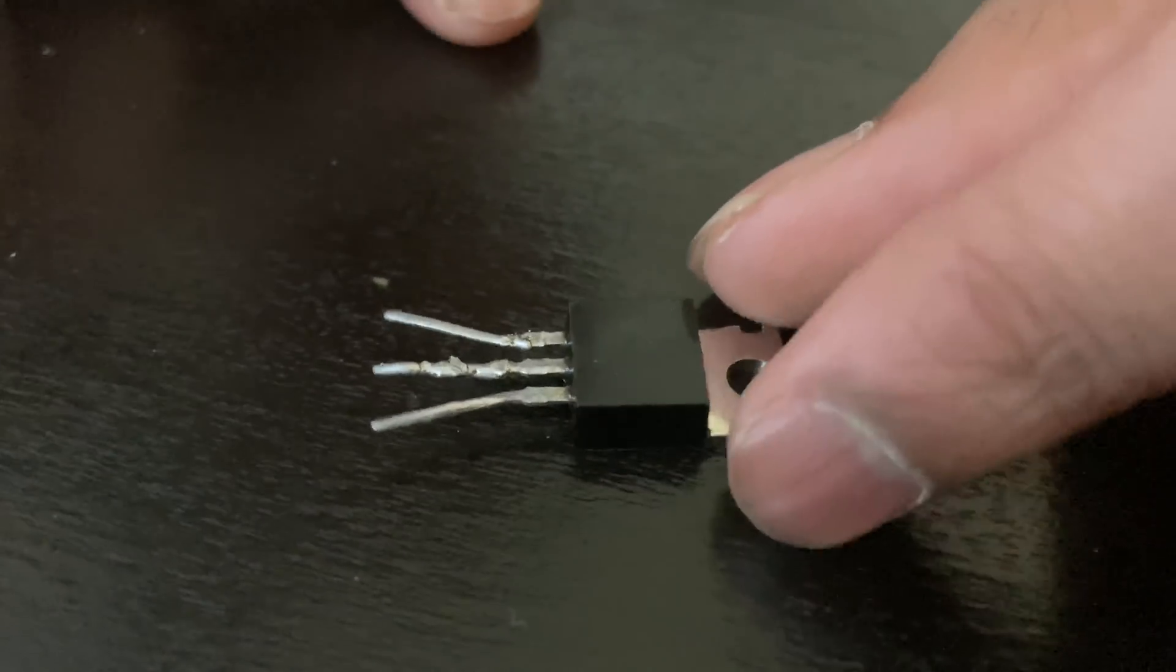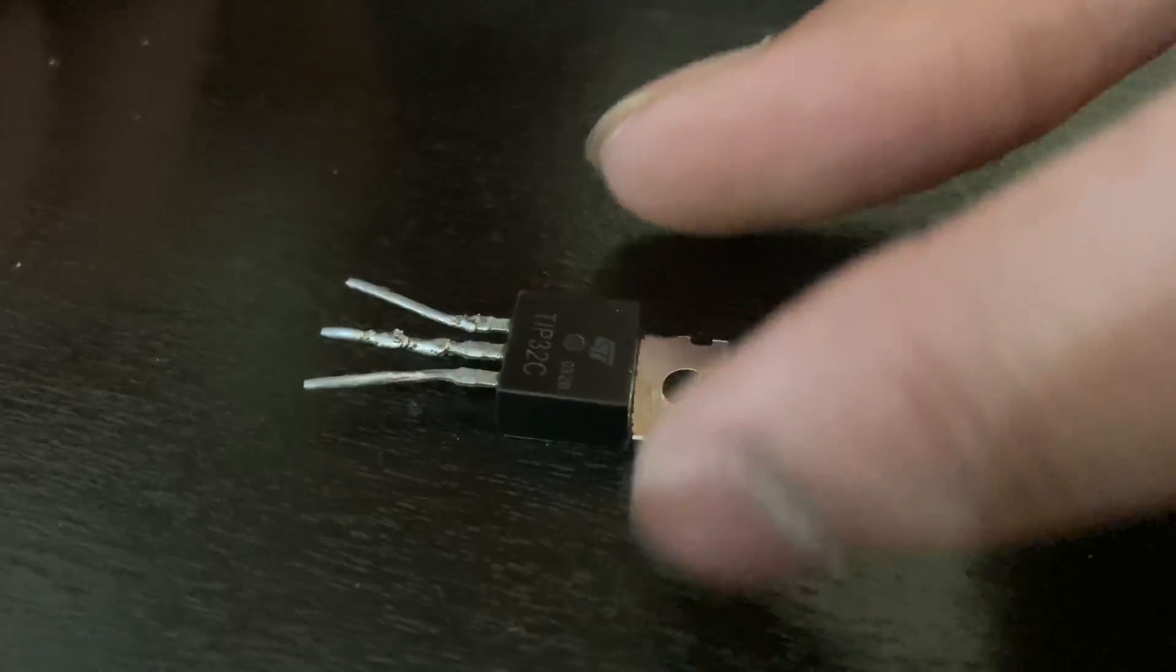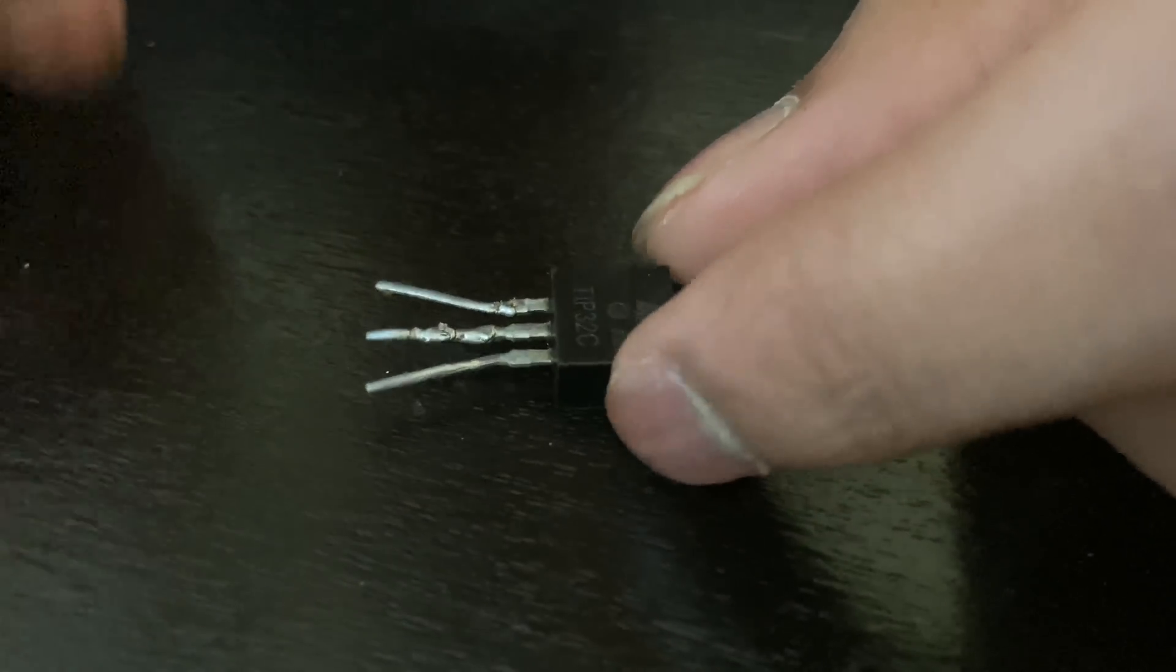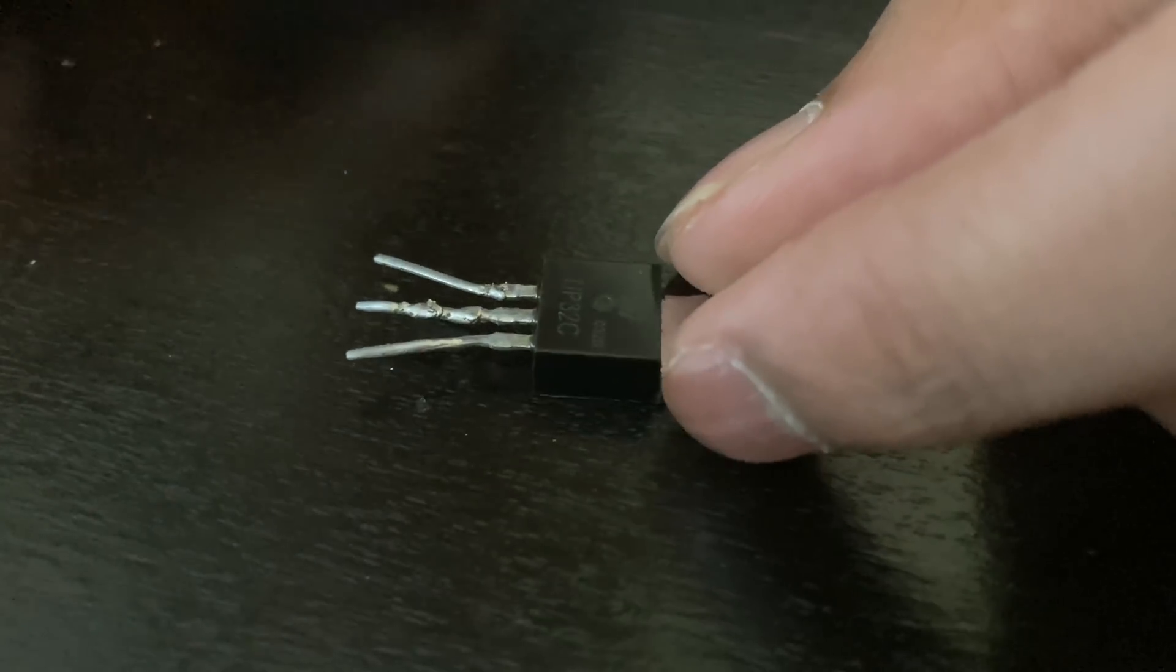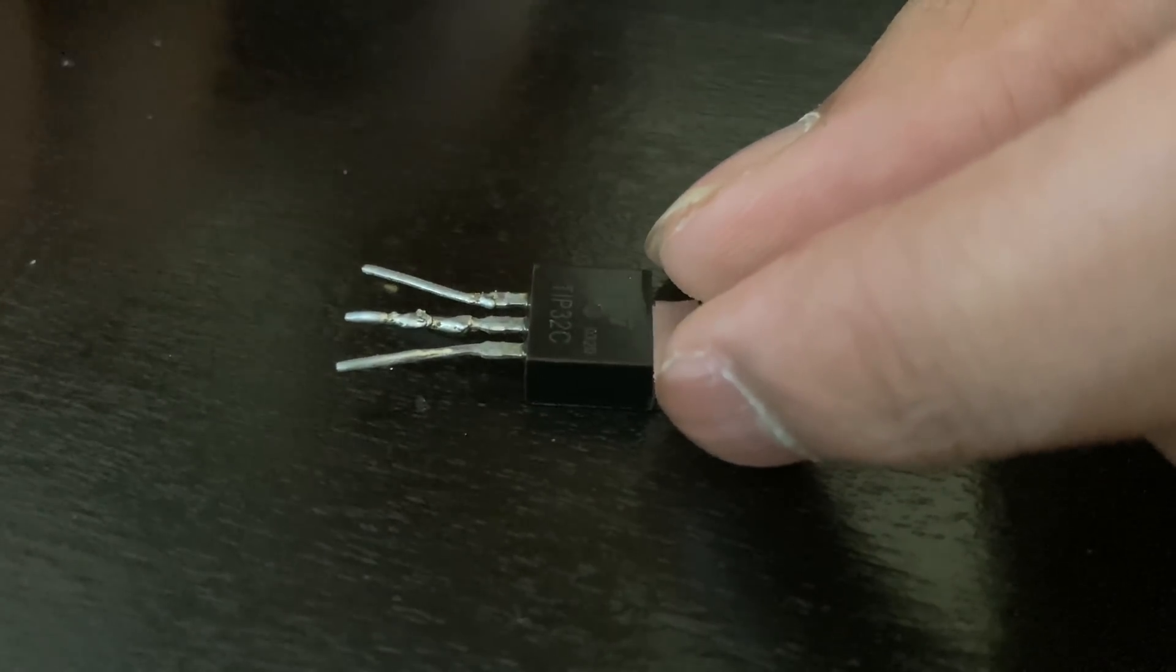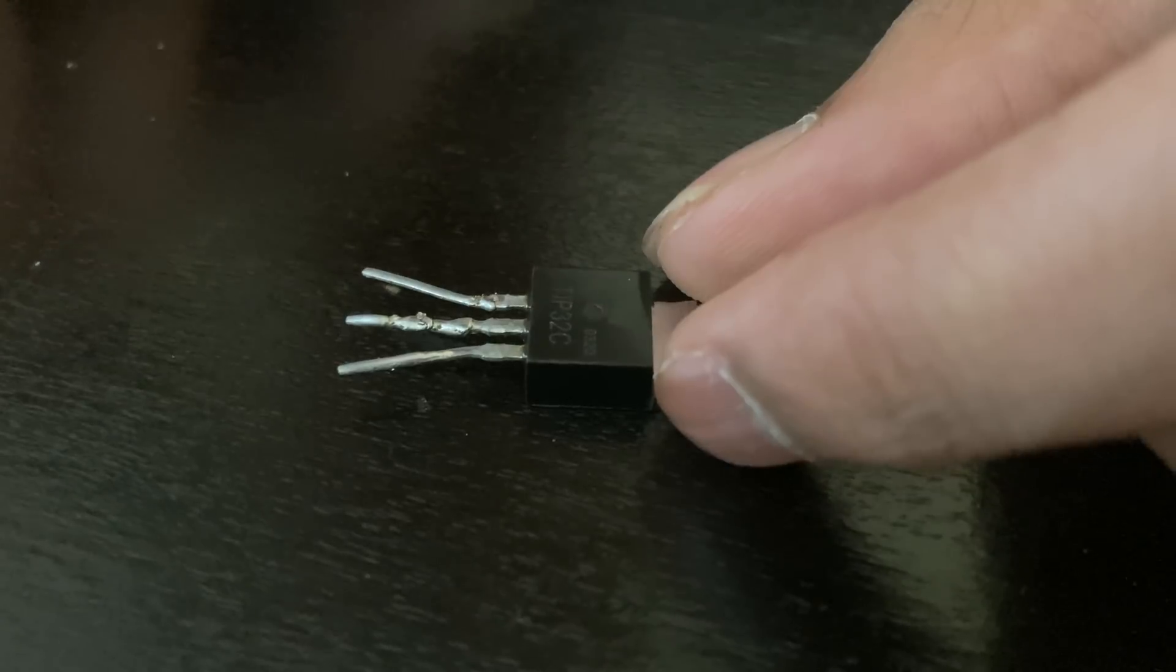So now we are going to stick the transistor. A transistor has three terminals: the base, collector and emitter. How the transistor works is that it works like a switch and it turns on and off the pump when it gets the signal. So let's stick the transistor on the container.